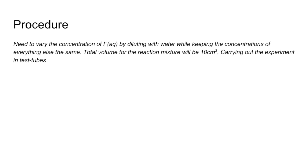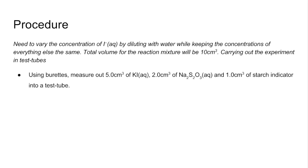Using burettes for accuracy, I'll measure out 5 cm³ of KI solution, 2 cm³ of sodium thiosulfate solution, and 1 cm³ of starch indicator solution into a test tube. The reaction won't start until the peroxodisulfate ions are present.